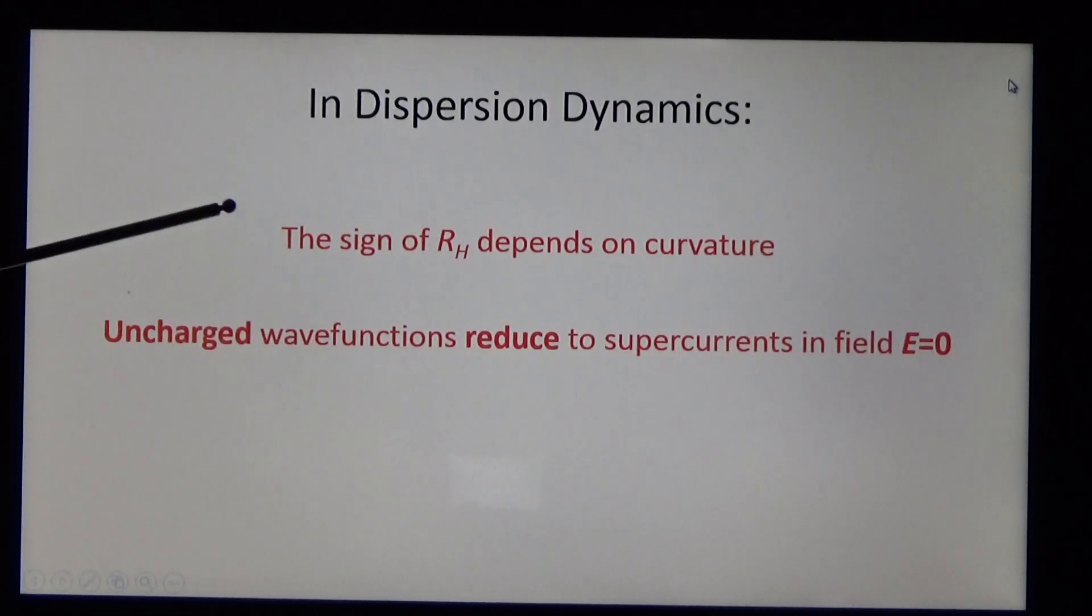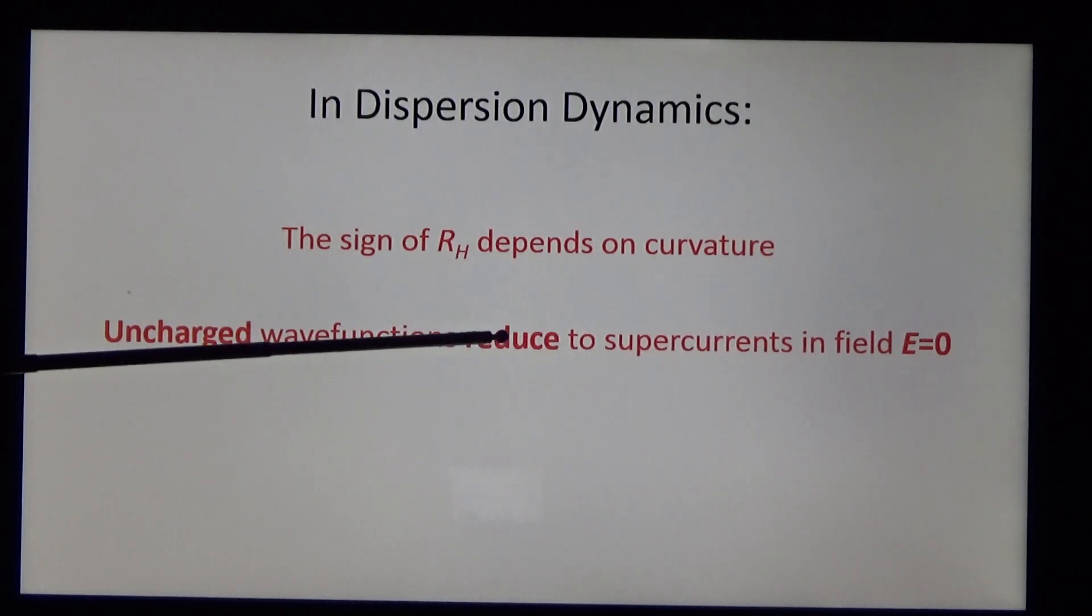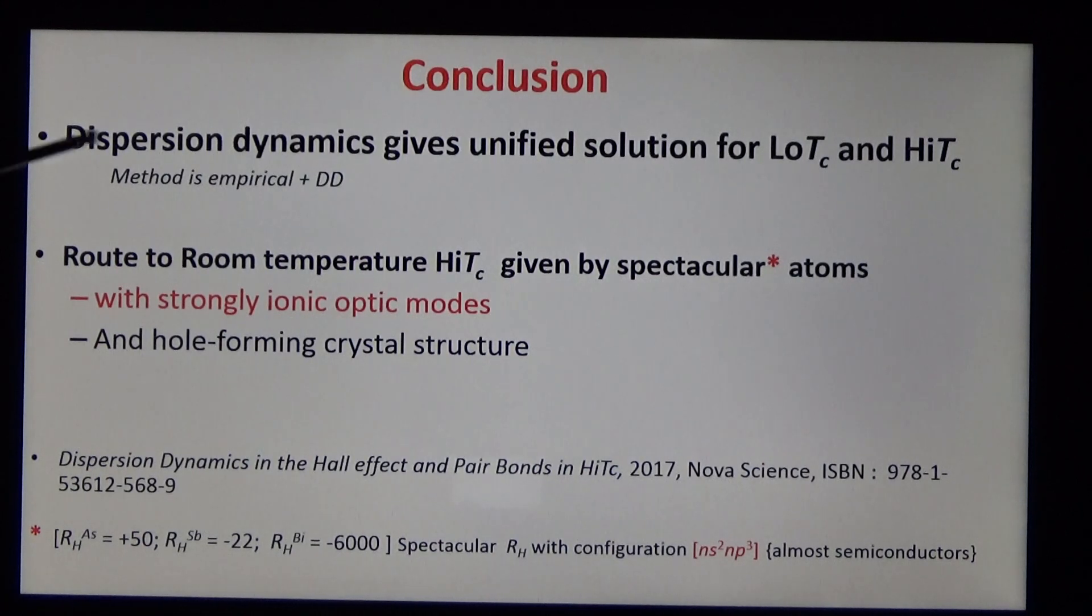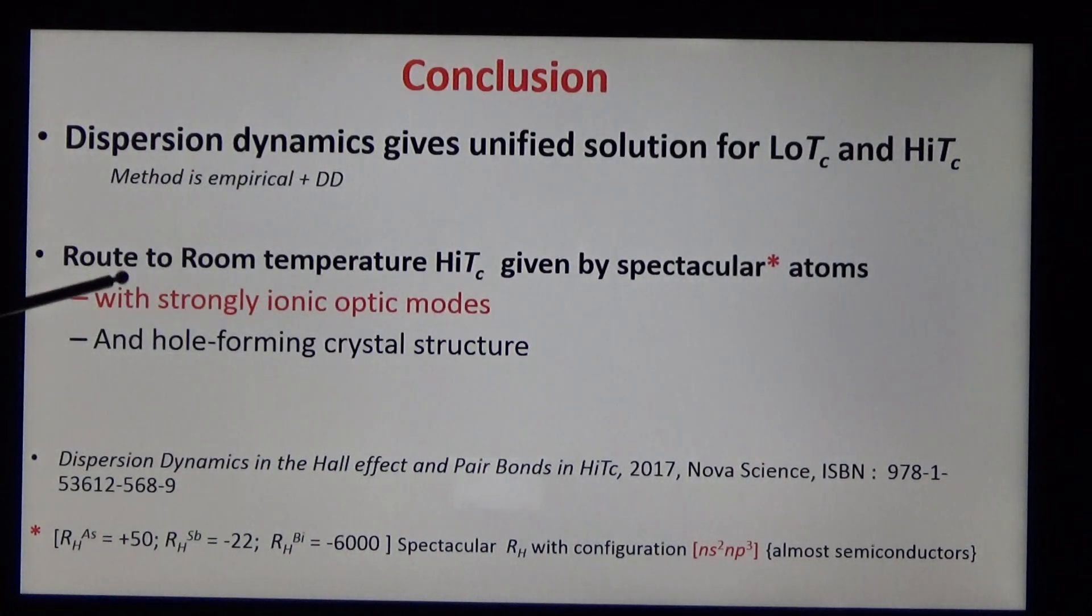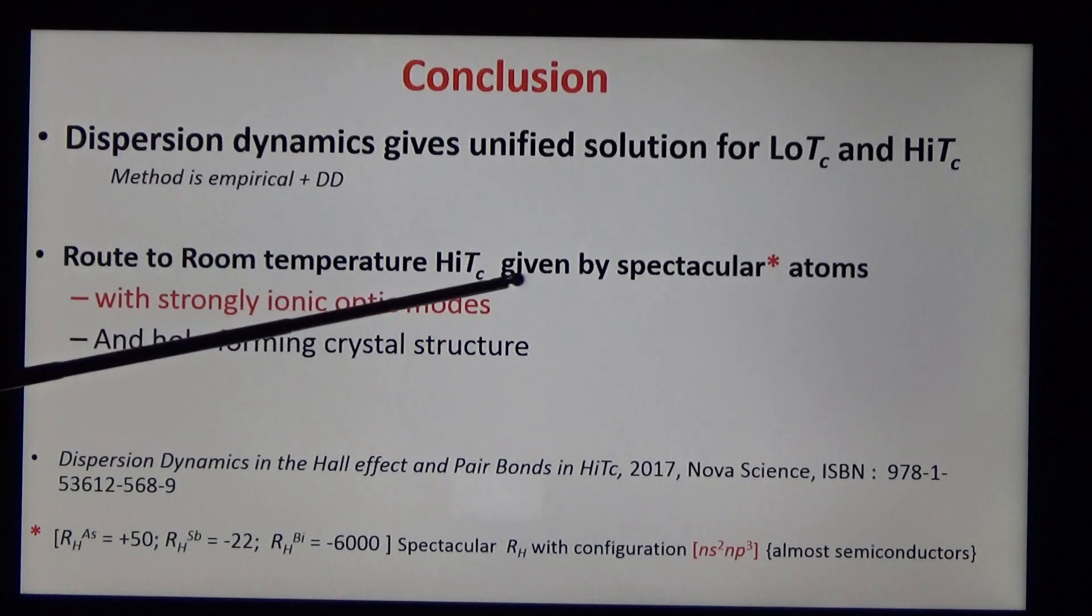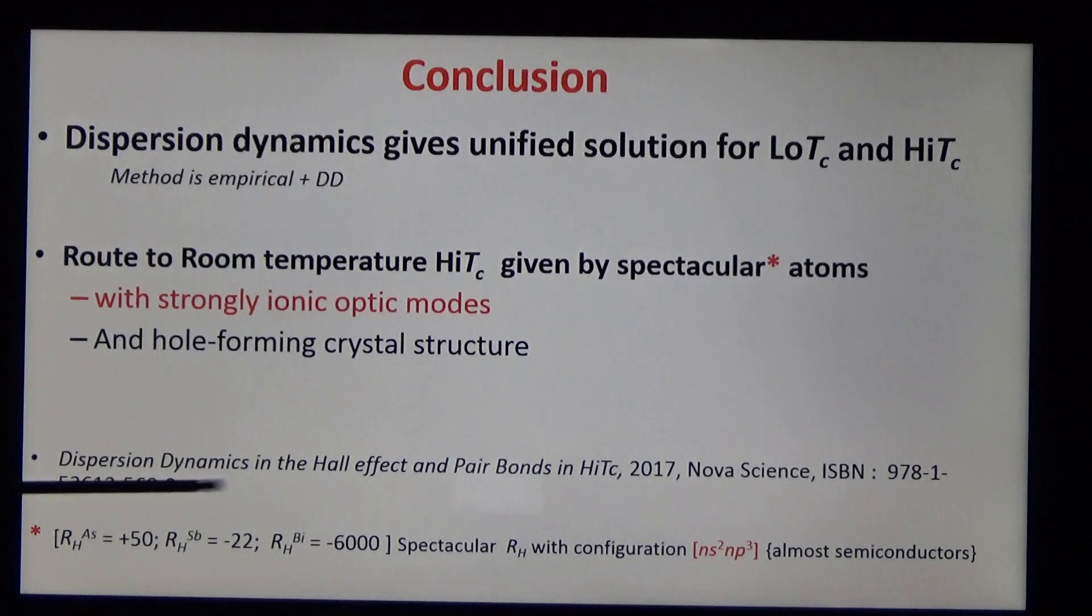So what have we done? The sign of the Hall coefficient depends on curvature. Uncharged wave functions reduce to supercurrents in field E equals zero. The conclusion is that dispersion dynamics gives unified solution for low TC and high TC. And the route to room temperature high TC is given by spectacular atoms. Some are shown below.